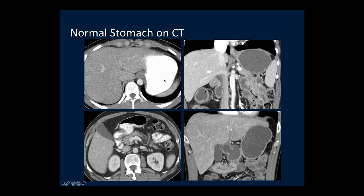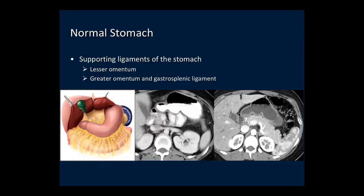The other area of pseudo-thickening that can be seen is at the GE junction, due to the oblique orientation of the GE junction with respect to the axial imaging plane. The fat surrounding the stomach is composed of perigastric fat and supporting ligaments. The fat between the stomach and the liver is the lesser omentum, also called the gastrohepatic ligament. The fat anterior to the stomach is the greater omentum, and the fat between the stomach and the spleen is the gastrosplenic ligament, a continuation of the greater omentum.